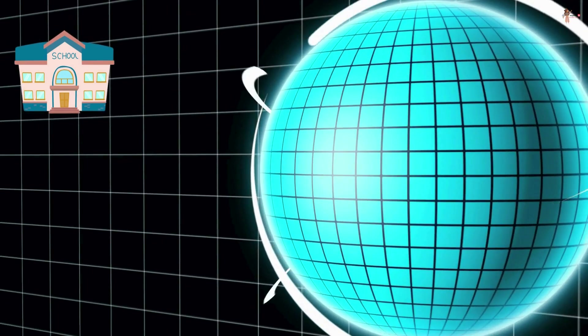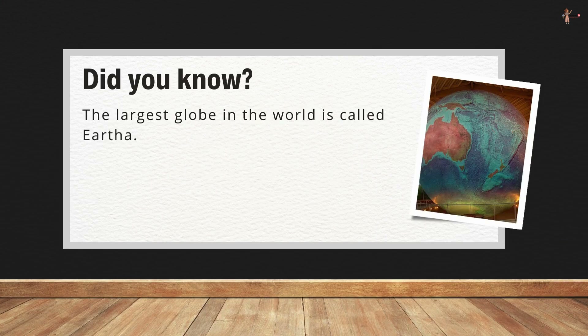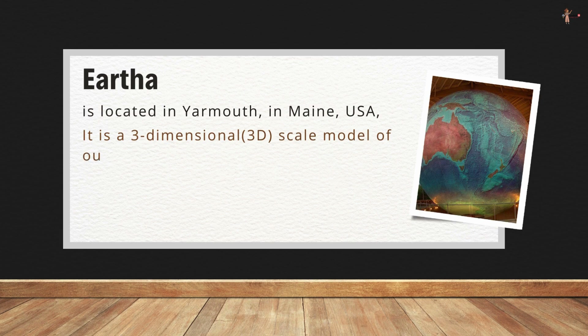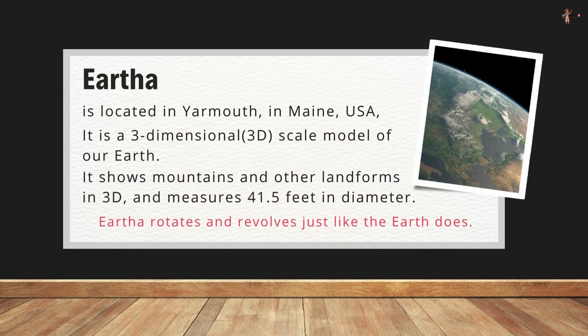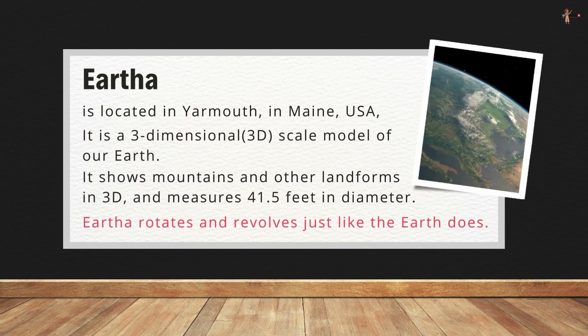As promised, here is your bonus fact. The largest globe in the world is called Eartha. It is located in Yarmouth, Maine, USA. It is a three-dimensional scale model of our earth — it shows mountains and other landforms in 3D and measures 41.5 feet in diameter. It rotates and revolves just like the earth does.